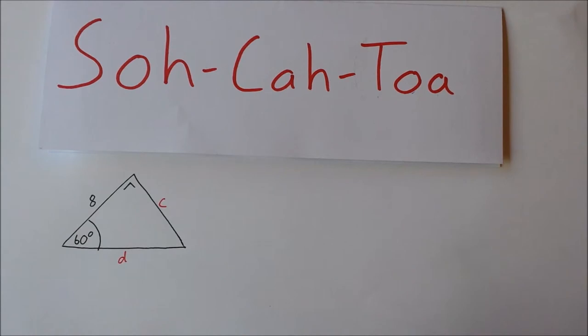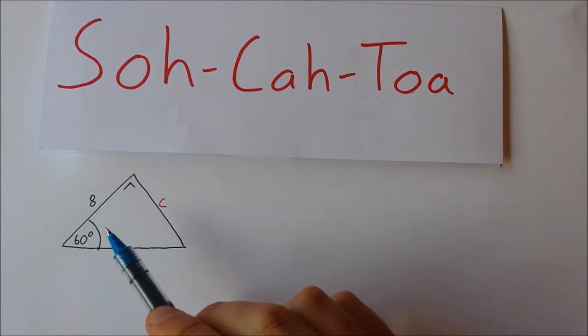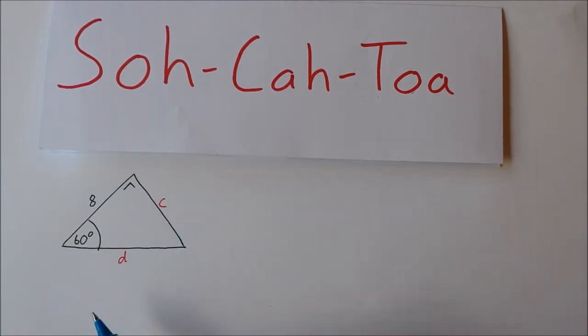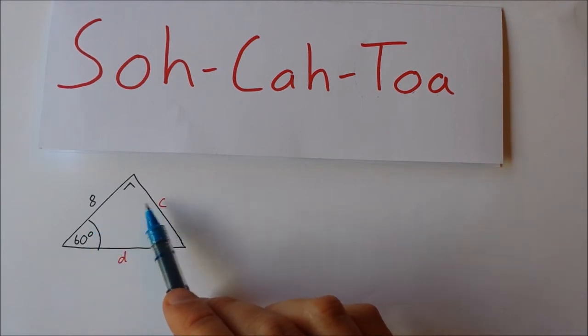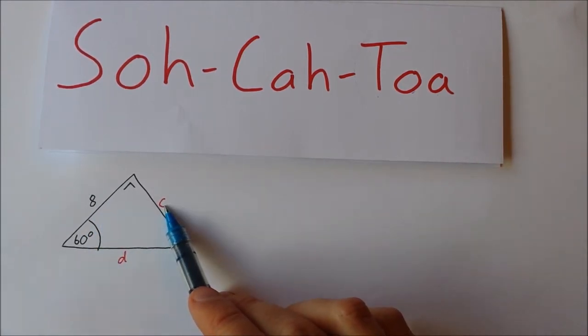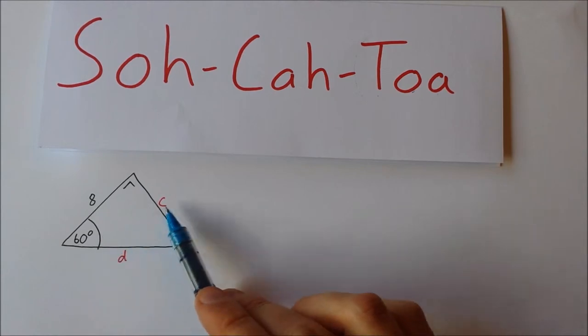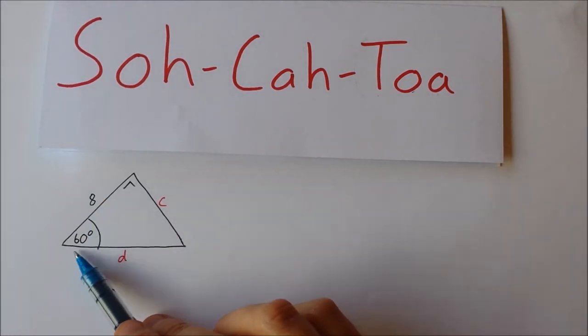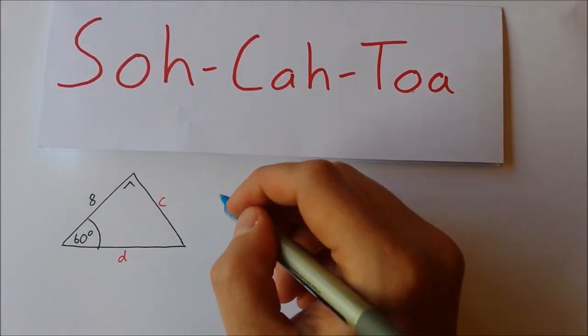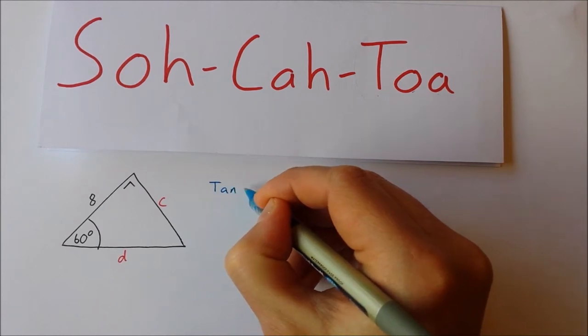Okay, let's go on to our next triangle here. Let's try and calculate the side 'c'. So I have 8, I want 'c'. Now 'c' is opposite, 8 is adjacent, so I'm going to use tan.